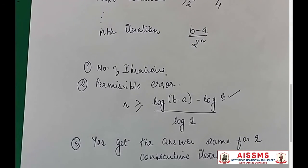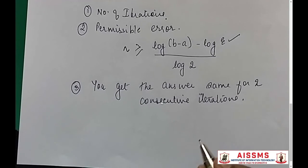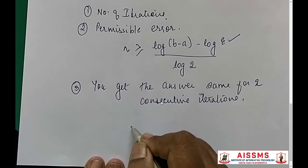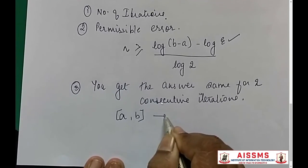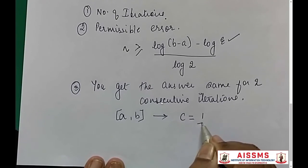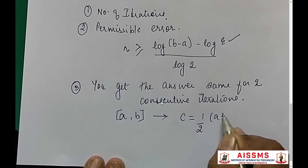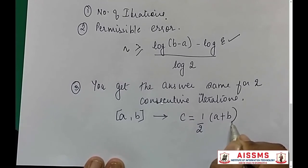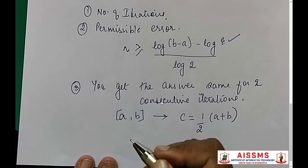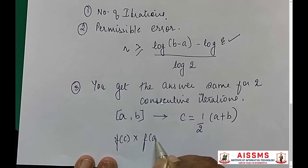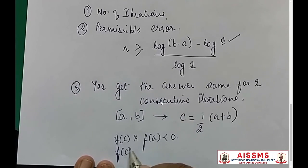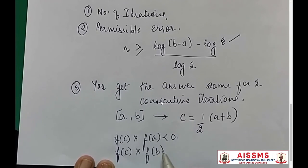The main point to remember for the bisection method is: if you have interval [a, b], the next approximation c = (1/2)(a + b). To get the next approximation, check whether f(c)·f(a) < 0 or f(c)·f(b) < 0. Thank you.